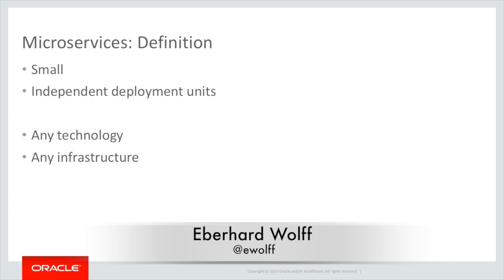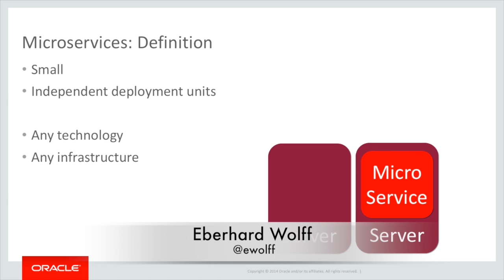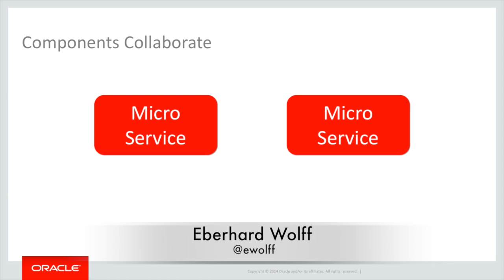If you look at an application consisting of microservices, there is a server that runs a microservice and another server that runs another microservice. In order for microservices to collaborate, you can use links. In my opinion, microservices might include a web UI, and because they can include a web UI, they can just link to one another. So if there is a catalog, it can link to a details page of a product that is actually provided by a different microservice.